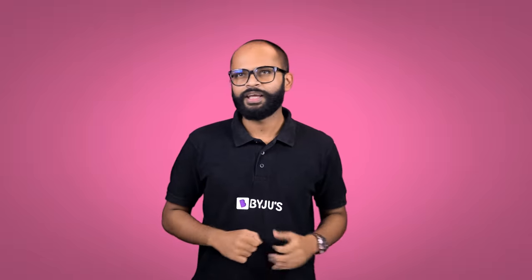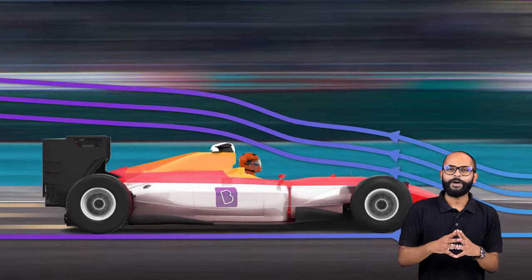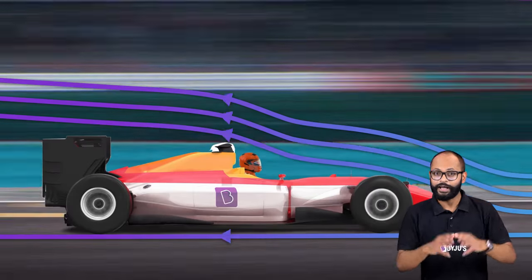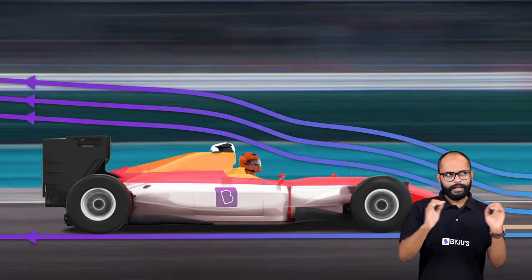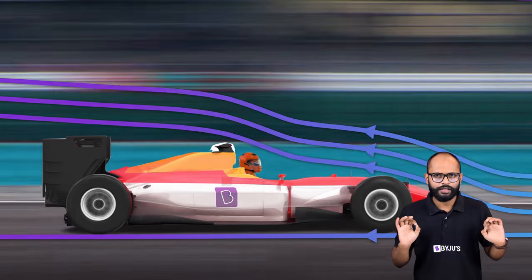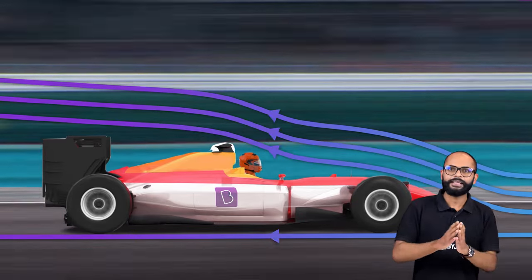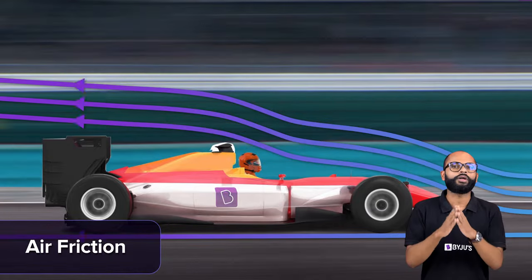Would you believe if I told you this enemy is something we all know? It's actually air. The car has to push the particles of air aside as it moves through it — it slows the car down. So the air opposes the motion of the car, and we say that air exerts air friction on the car.